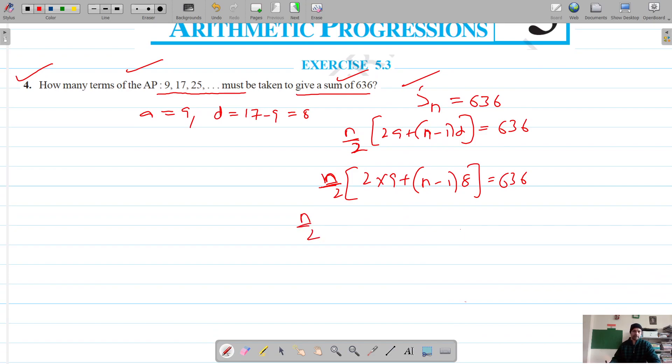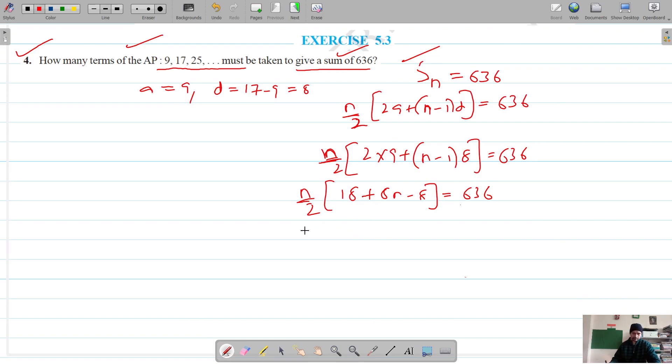Okay, now n by 2 into 9, 2 is 18, it's 8n minus 8 if you open the bracket, 636. So this is n, and if we take 2 to the other side, so if we shift 2 to this side, it's now n by 2 into 18 minus 8 is 10 plus 8n, that is equal to 636.